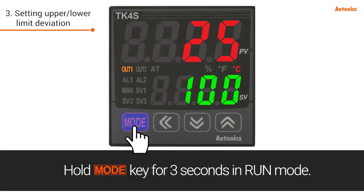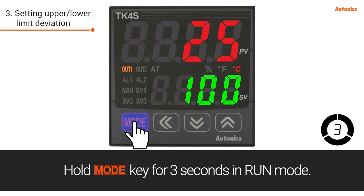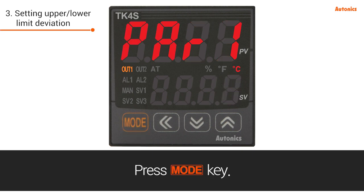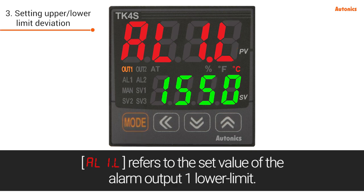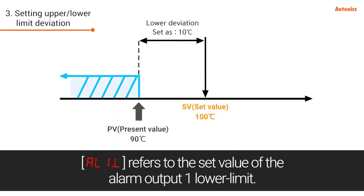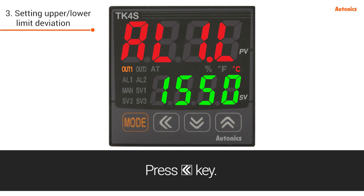Hold the mode key for three seconds in run mode, then press the mode key. AL1.L refers to the set value of the alarm output 1 lower limit. Press the left key.